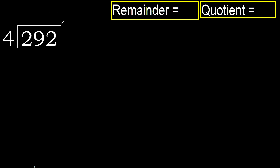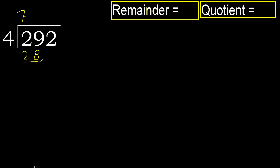292 divided by 4. 2 is less, therefore next: 29. 29 is not less. Therefore, 4 multiplied by which number is nearest to 29 but not greater? 4 multiplied by 8 is 32 — greater. 4 multiplied by 7 is 28 — not greater. 29 minus 28 is 1. Next: bring down.